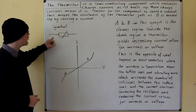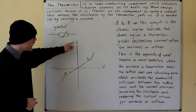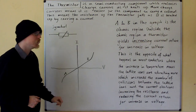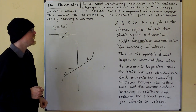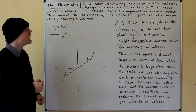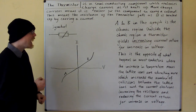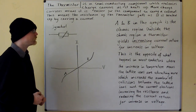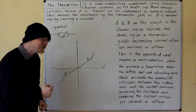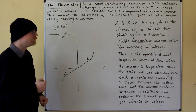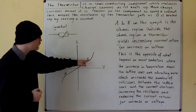This is the symbol for the thermistor. This is the IV curve for the thermistor. A to B in the graph is the ohmic region. Outside the ohmic region, a thermistor yields increasing current return for an increase in voltage.